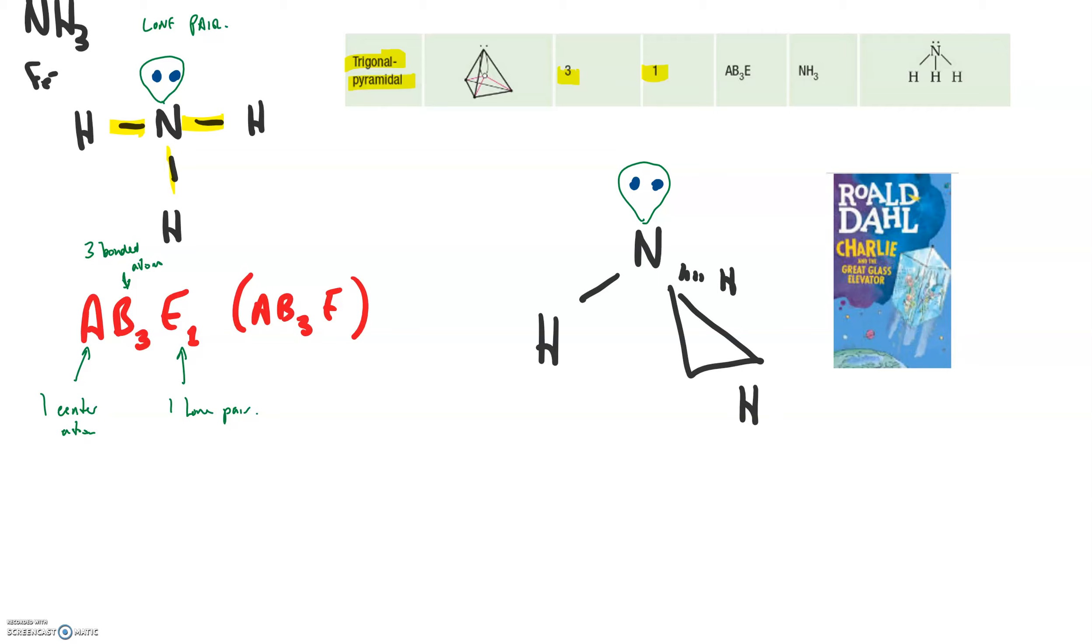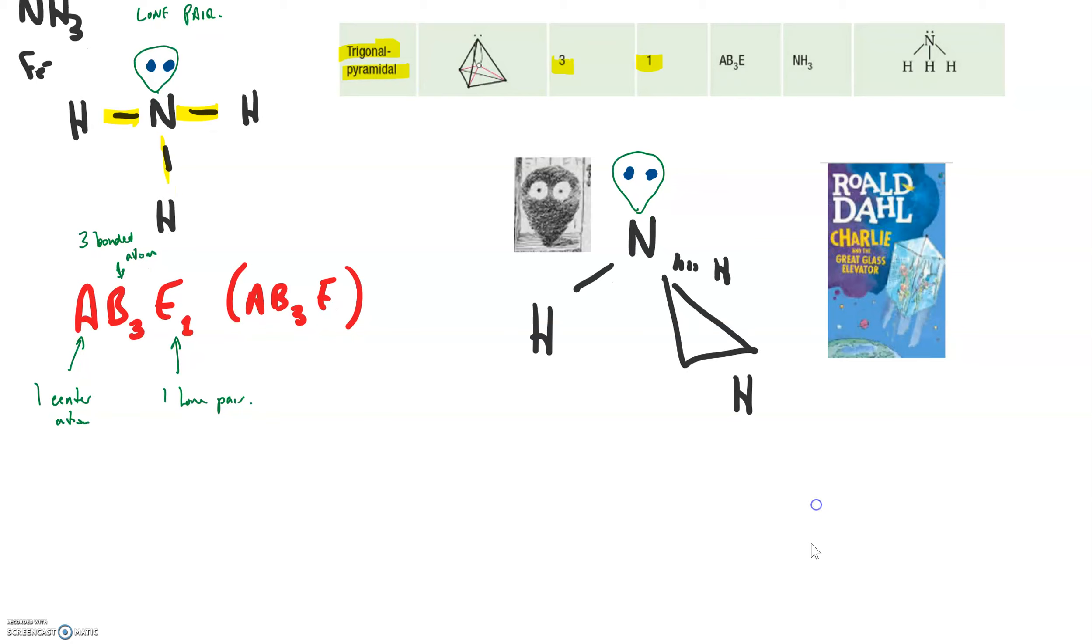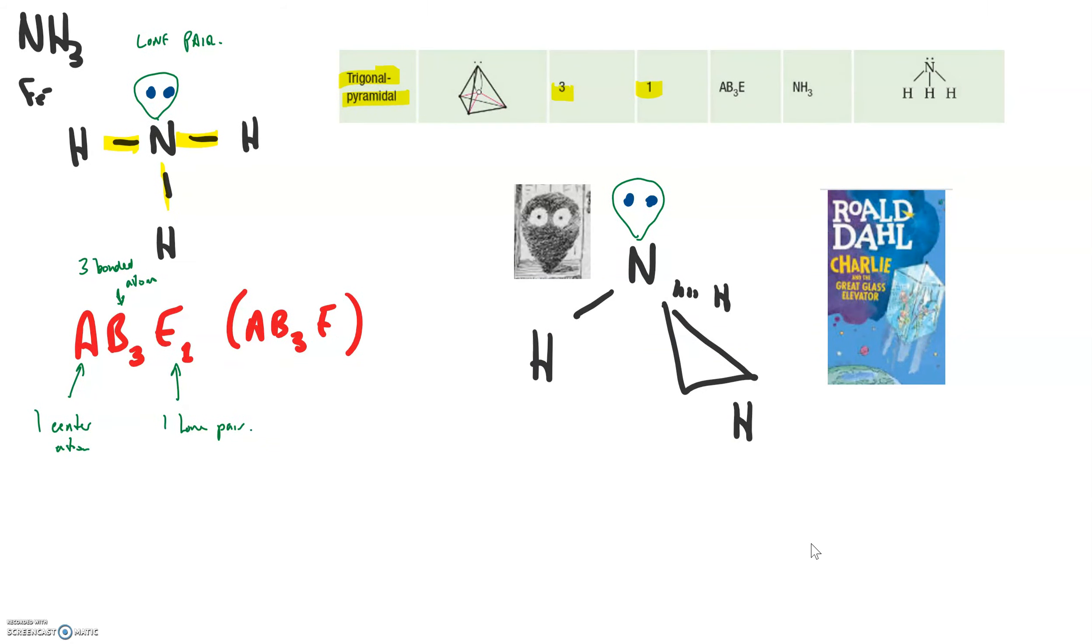But in this book, there are some villainous aliens, and they're called vermicious knids, and they look like this. Hopefully you see the resemblance. In the book, vermicious knids are nasty people, and they're best to be avoided. So whenever we see a vermicious knid, we're going to avoid it.